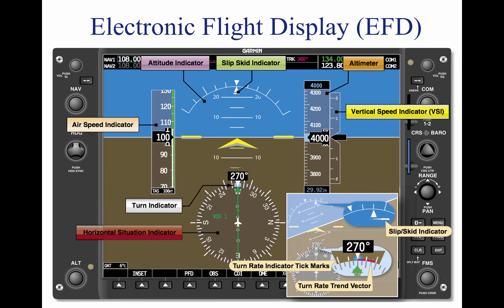Configured similarly to traditional panel layouts, the ASI is located on the left side of the screen and is displayed as a vertical speed tape. As the aircraft increases in speed, the larger numbers descend from the top of the tape. Airspeed markings for VX, VY, and Rotation Speed (VR) are displayed for pilot reference. As on traditional analog ASIs, the electronic airspeed tape displays the color-coded ranges for the flap operating range, normal range, and caution range.